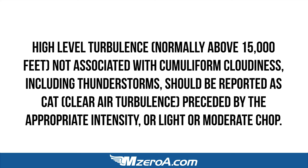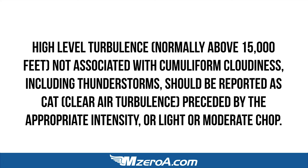Clear air turbulence is high-level turbulence, normally 15,000 feet and above, not associated with cumuliform cloudiness. In the summertime we get cumuliform clouds — fly underneath those and it's going to be bumpy, but that's not CAT. Turbulence at 15,000 feet and above, not associated with cumuliform cloudiness including thunderstorms, should be reported as CAT, preceded by the appropriate intensity — light, moderate, chop, or whatever it actually is.